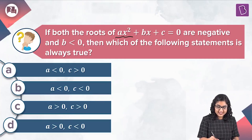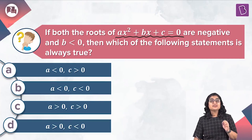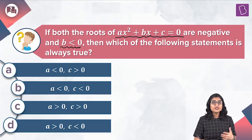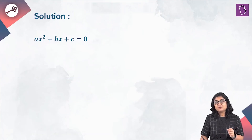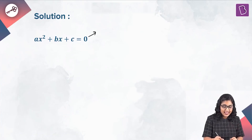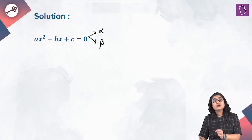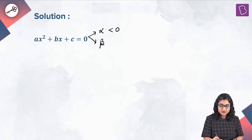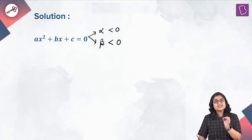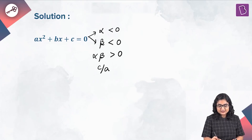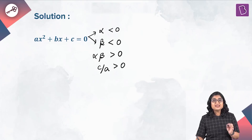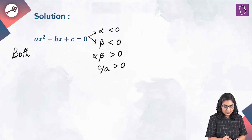In this question, we have been given a quadratic equation ax squared plus bx plus c equal to 0. It's also given that both roots of this quadratic equation are negative and b is less than 0, then which of the following statements are correct? If we assume it has two roots alpha and beta, then both roots being negative means alpha less than 0 and beta less than 0. We can say that alpha times beta is going to be greater than 0, or c by a is going to be greater than 0, meaning both a and c are of the same sign.